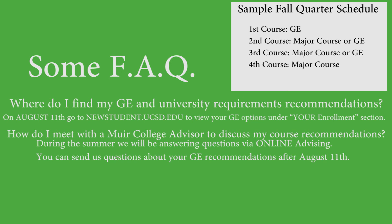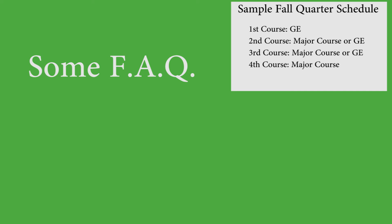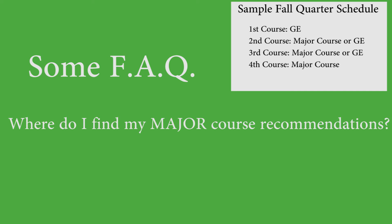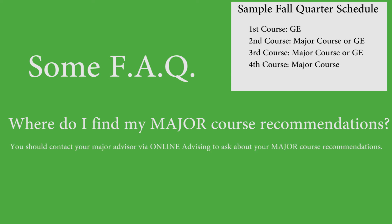If you are interested in a graduation plan, we will gladly meet with you on an appointment basis once fall quarter begins. Where do I find my major course recommendations? You will need to contact your major advisor directly via the online advising section of the New Student website, and ask about your remaining major requirements as well as course recommendations for fall quarter. We recommend that you contact them no later than early August so they can answer your questions prior to your enrollment date and time.